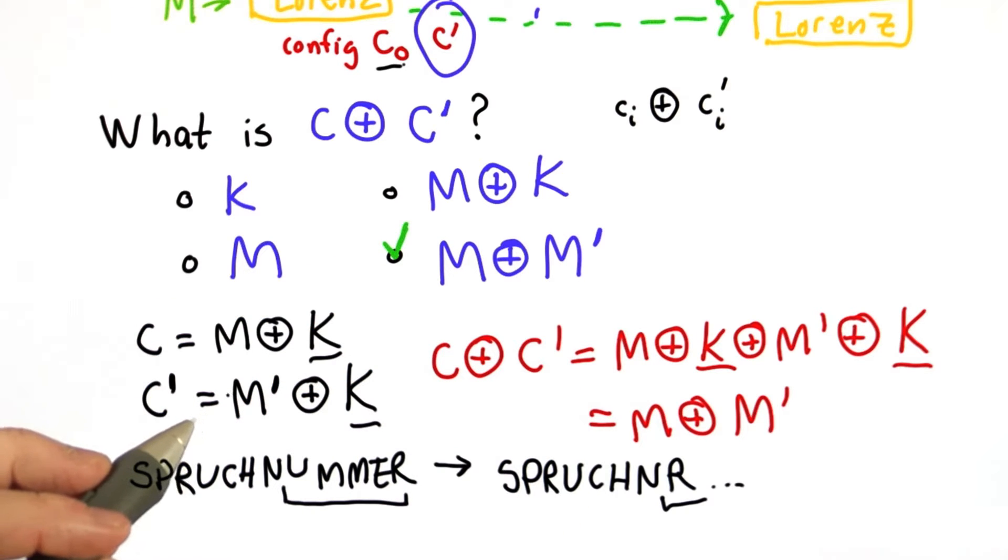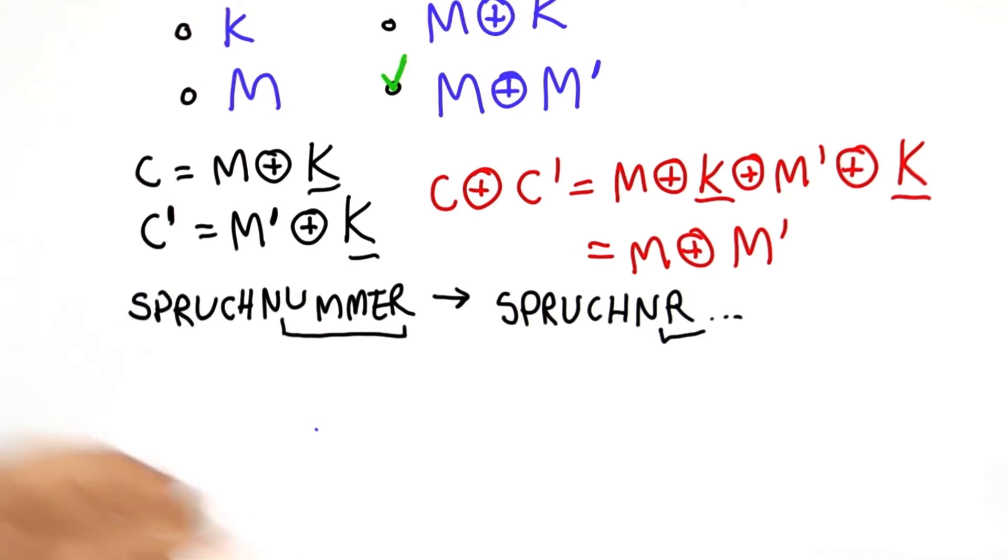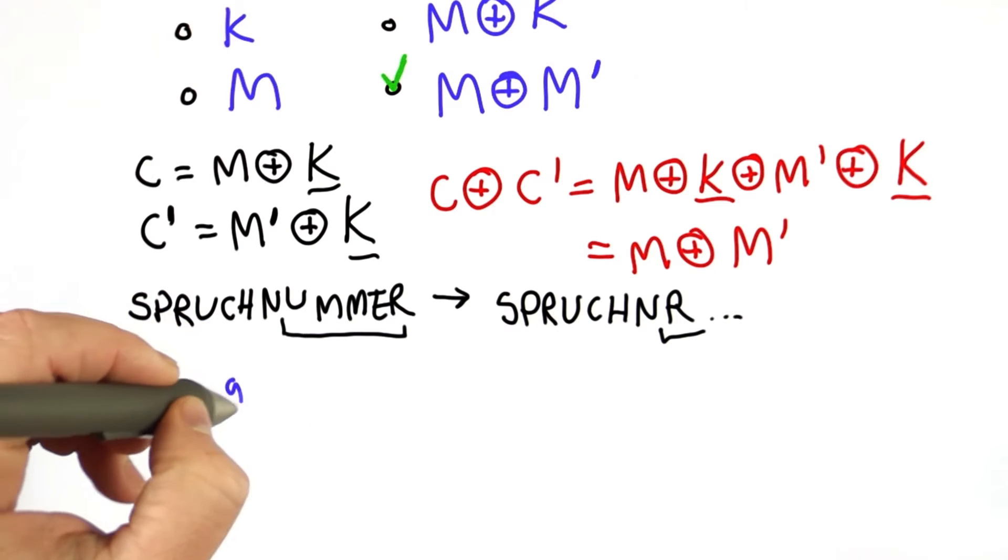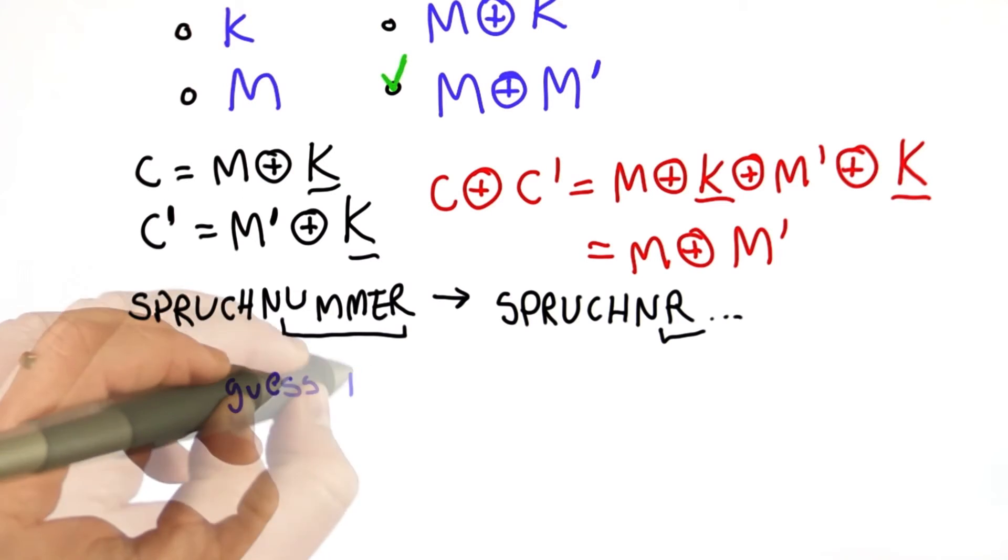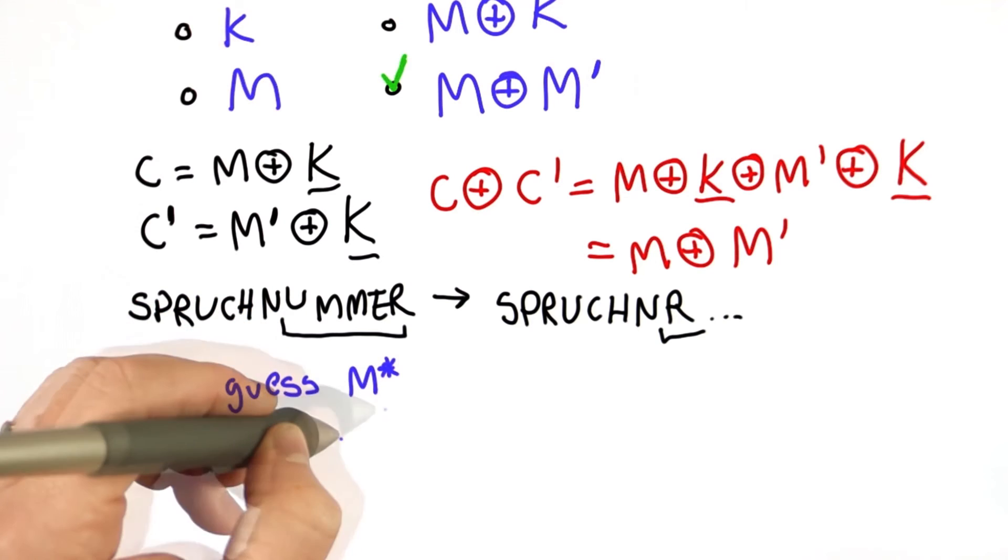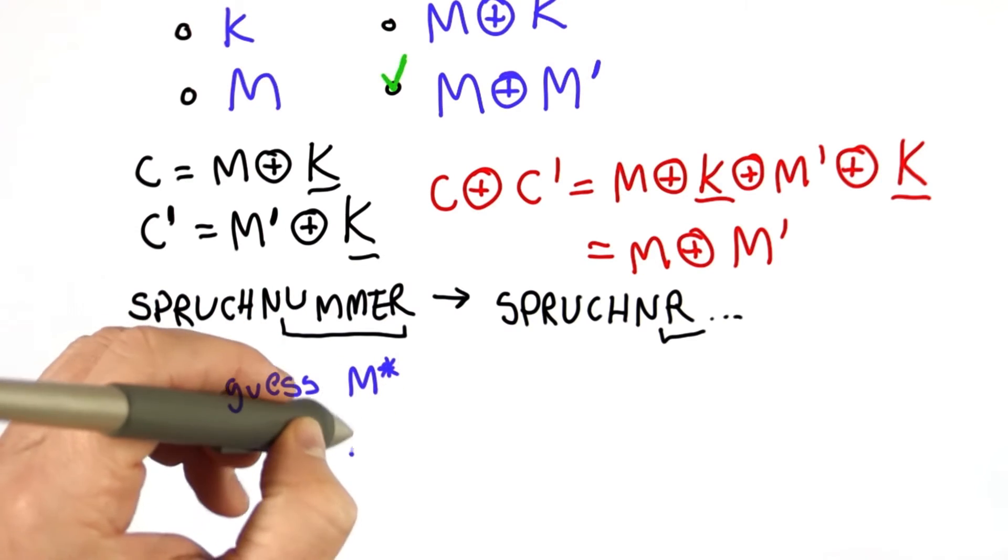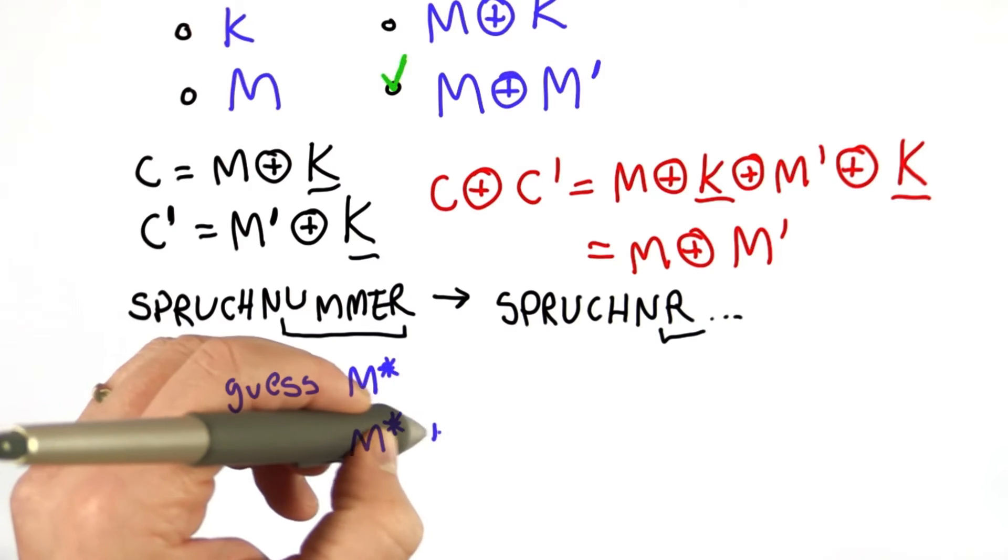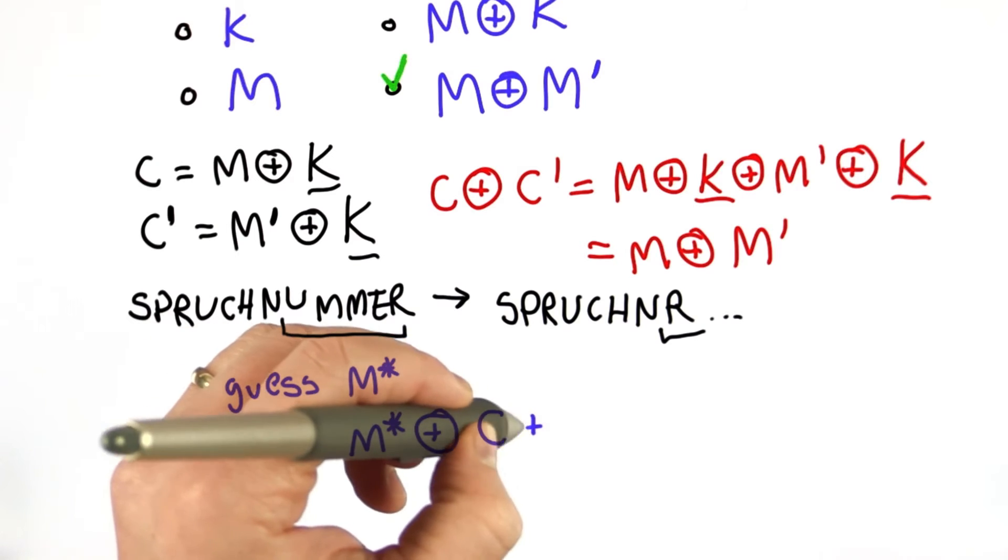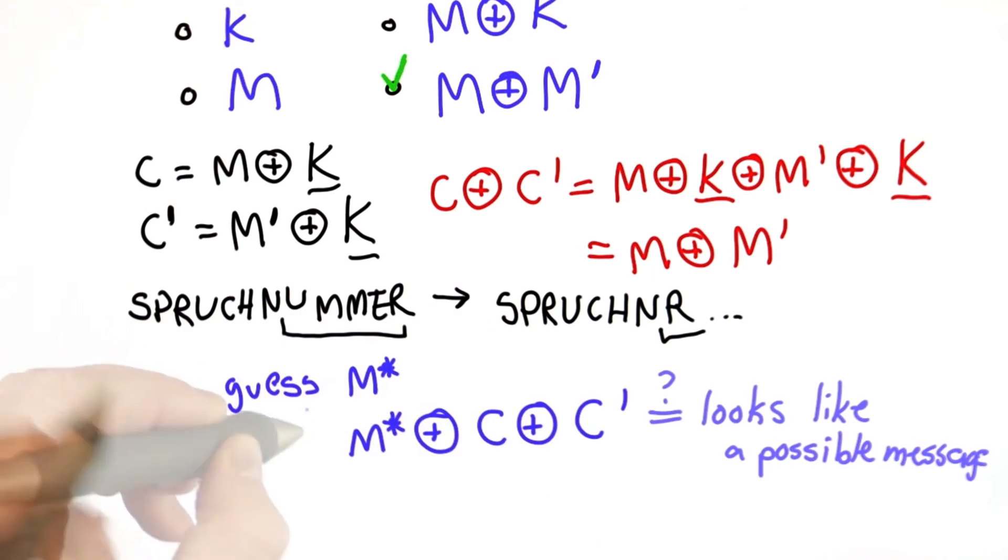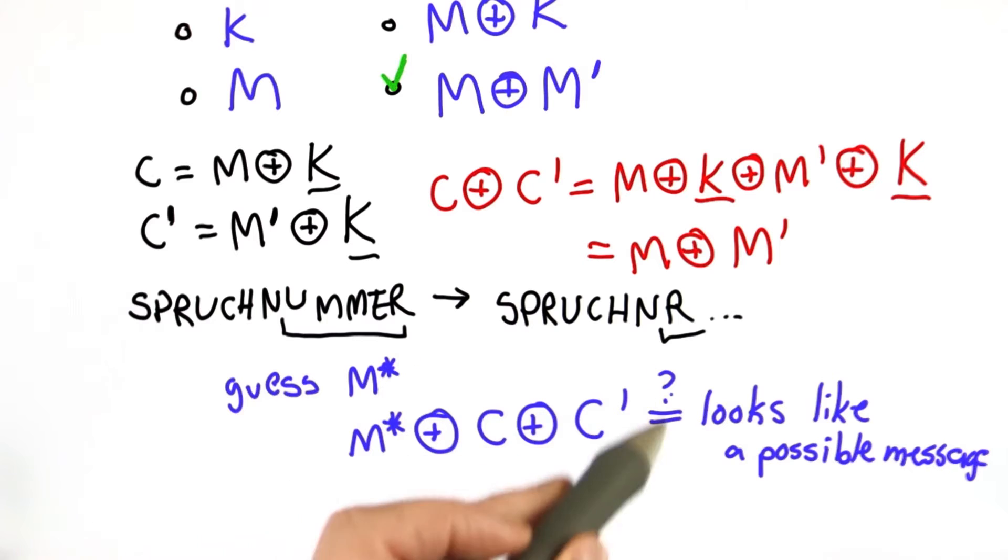The allies had a pretty good guess that the message was in German. So the allies could start trying, let's say the guess, the message, we'll guess it's m star. Then we could try seeing what we get when we do m star xord with c, xord with c prime. So we can make some guess for the message, try xoring it with the intercepted ciphertext. That should give us back the other message. And we'll look if that looks like a possible message. This is definitely a painstaking process, but something that can be done.